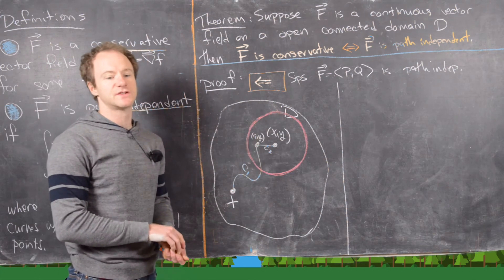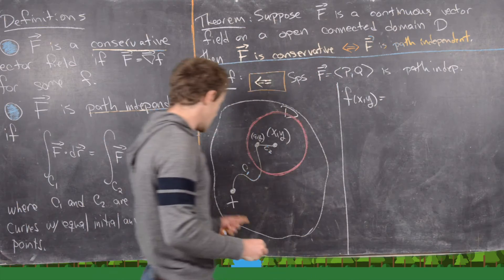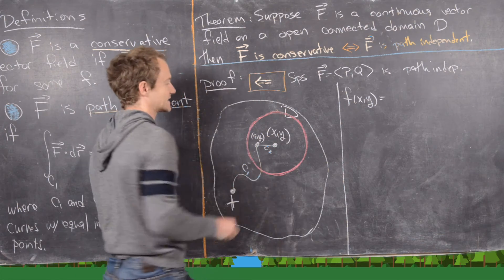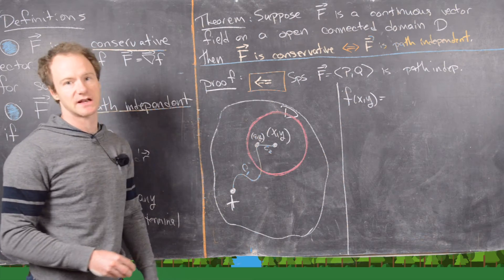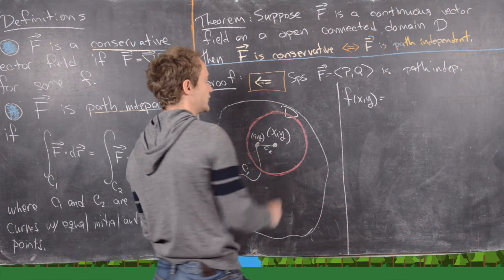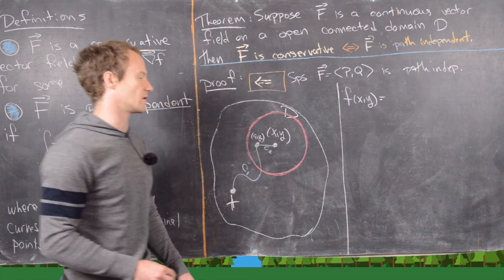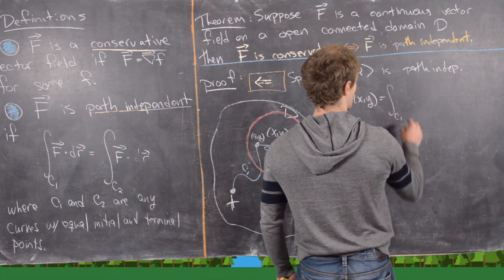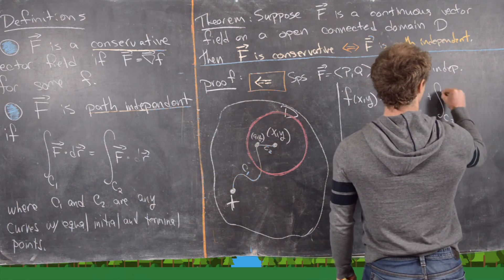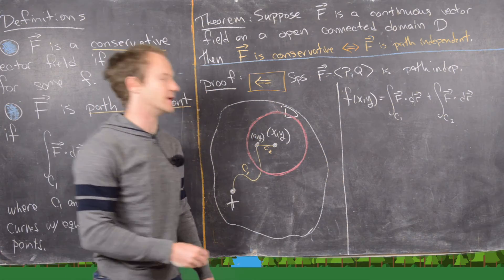We define the function little f(x, y) as the line integral from capital X to (x, y), split into two parts: the integral along C1 of F·dr plus the integral along C2 of F·dr. Note that capital X is fixed and (x, y) is variable, so this is genuinely a function of (x, y).